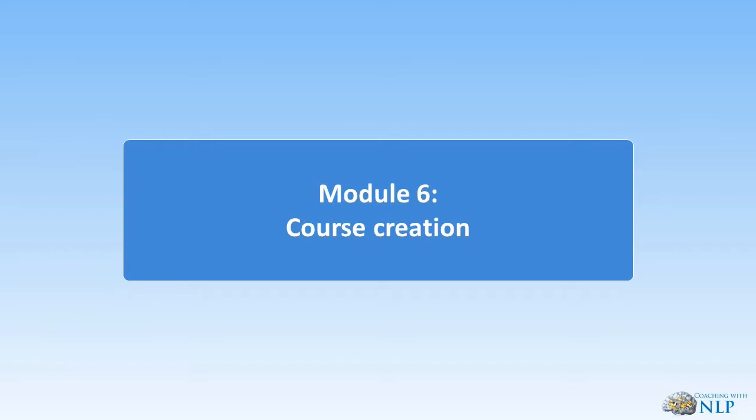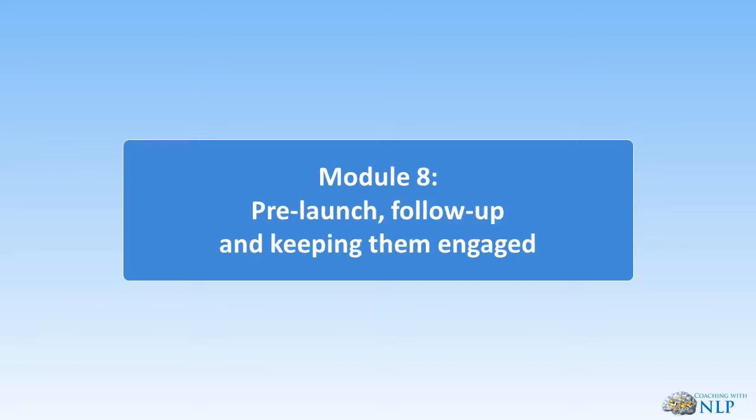Module seven is about finding your pricing and positioning sweet spot — finding a foolproof pricing strategy that works for you, increasing your value without increasing your workload. We'll also cover secrets to creating and growing an active community, and there's an exercise for setting your price and finding out what the right price is for you and your product.